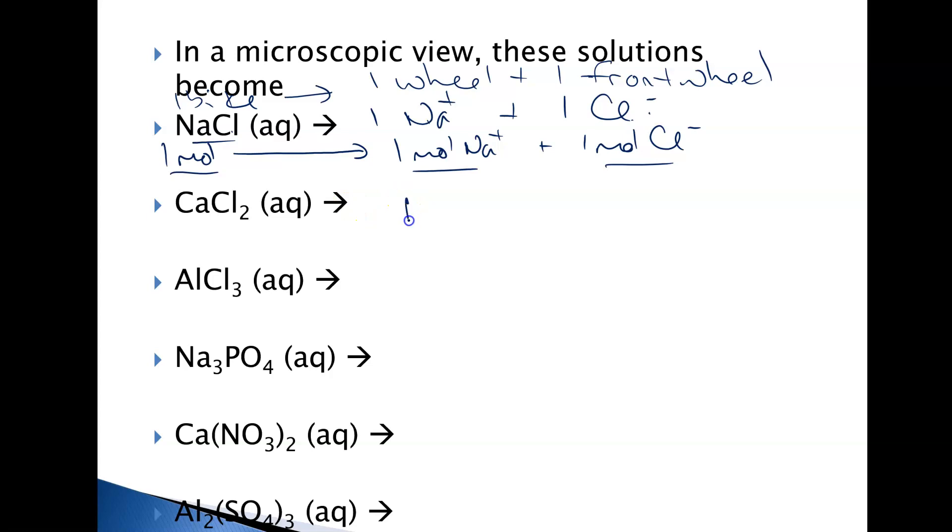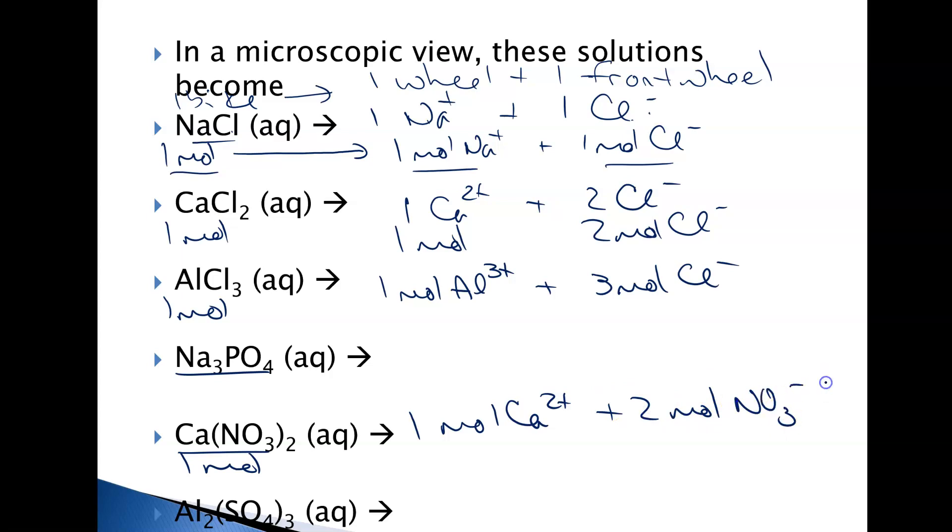If I have calcium chloride, it breaks apart into one Ca2+ and two chlorides. For every one mole of this, I get one mole of calcium and two moles of chloride. So this is like a tricycle. I break it apart, I get one front wheel and two back wheels. If I had one mole of AlCl3, I would get one mole of aluminum ion and three moles of chloride ions. This is more like a car. For Ca(NO3)2, if I have one mole, I'm going to get one mole of calcium ion and two moles of nitrate ion. And the last one, you get two moles of Al3+ and three moles of sulfate.